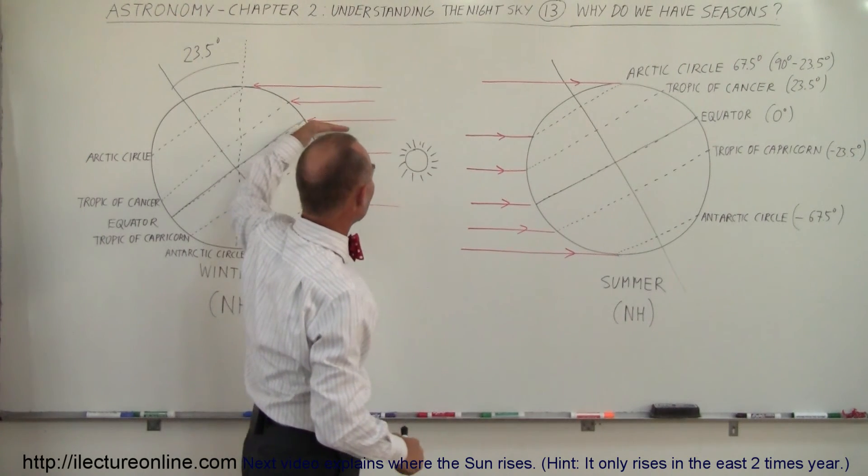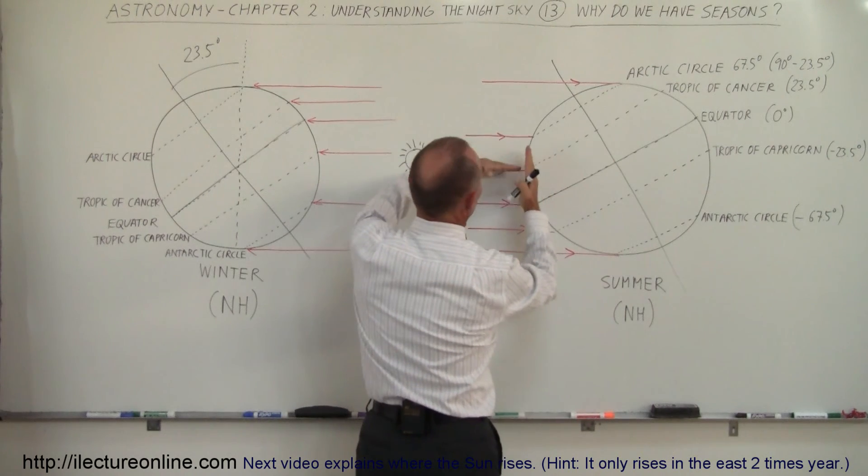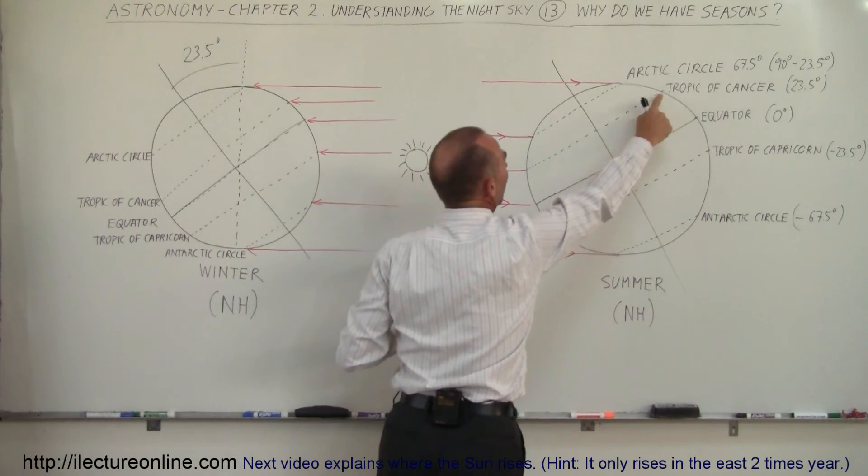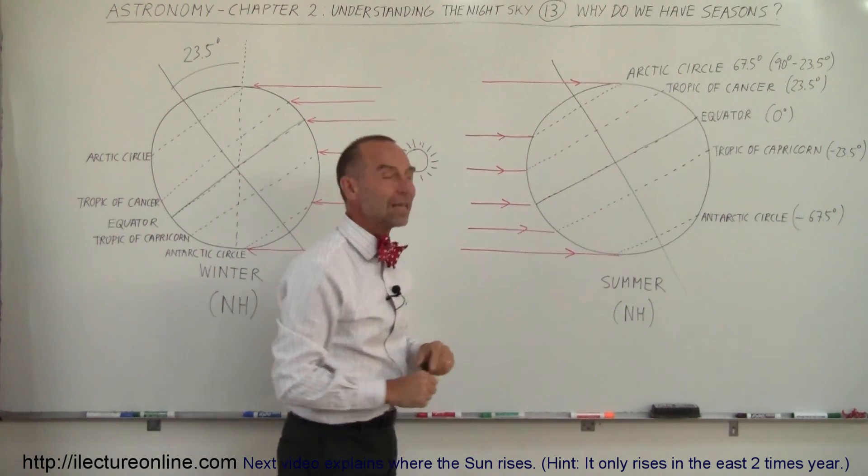Also notice that the sunlight will come directly and hit the earth right here, perpendicular to the surface of the earth at what we call the Tropic of Cancer which is the line 23.5 degrees above the equator.